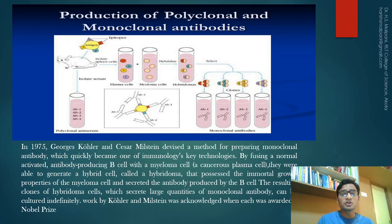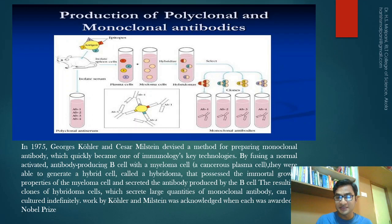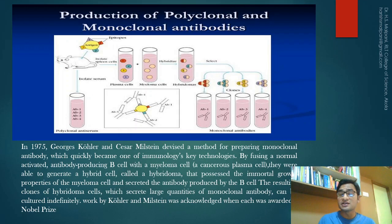The concept of monoclonal antibody started in the year 1975. George Köhler and César Milstein devised a method for preparation of monoclonal antibodies, which quickly became one of the key immunological techniques. In this method, normal activated antibody-producing B cells are fused with myeloma cells to generate a hybrid cell called a hybridoma, which possesses the immortal growth properties of the myeloma cell and secretes the antibody produced by the B cell. The resulting clones of hybridoma cells, which secrete large quantities of monoclonal antibody, can be cultured indefinitely. For this extraordinary work, these two scientists were awarded the Nobel Prize.